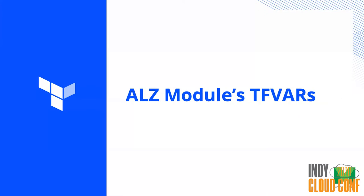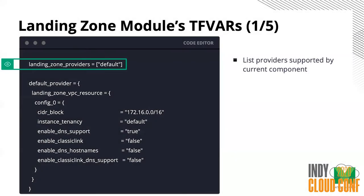The most important aspect is how you define these TFVars files. In each of these TFVars files, you need to define what provider is actually applied to this particular component. For example, let's say I have a component called landing_zone_vpc and I want this component to be mapped not to all of the providers I defined earlier, but only for the default provider.